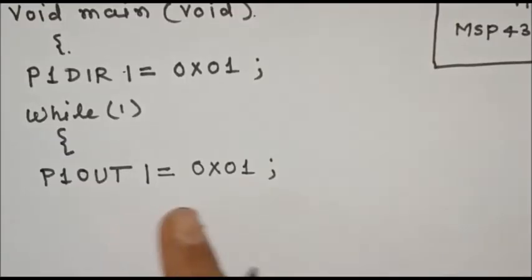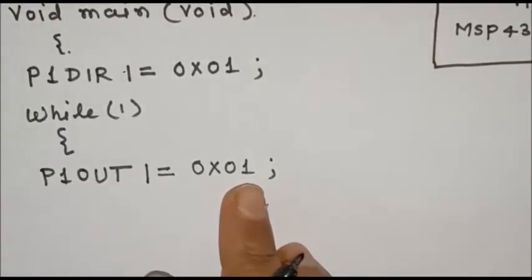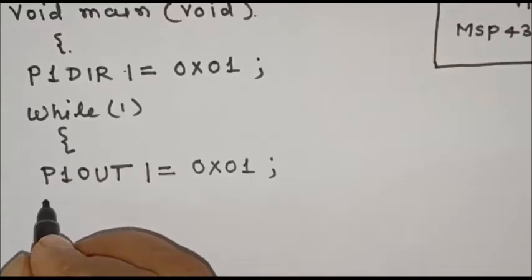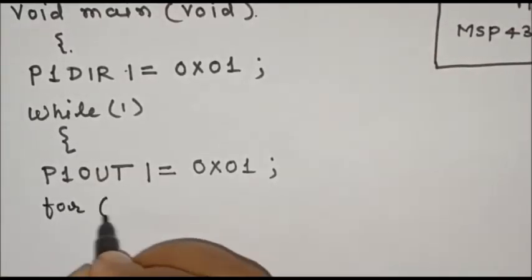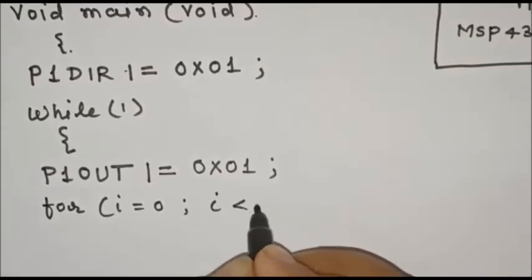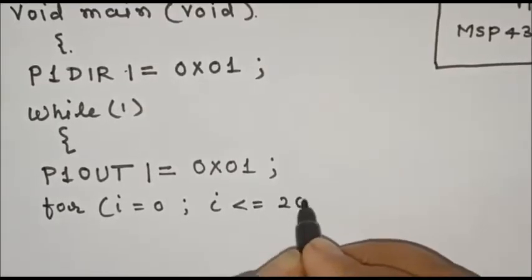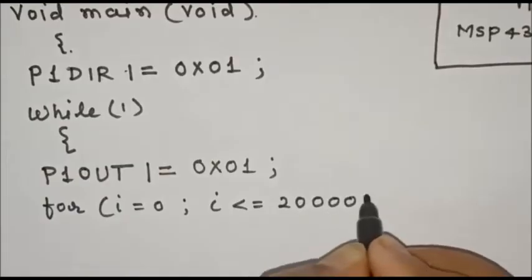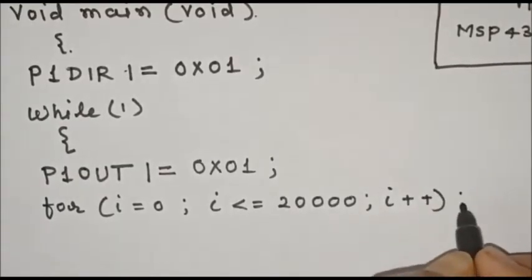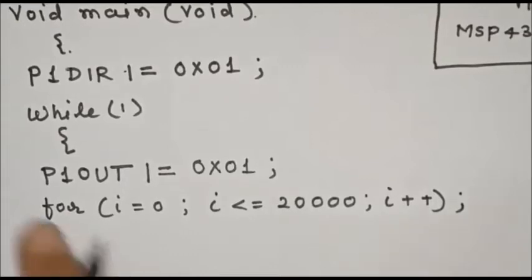Then we call some delay. For that we'll use for loop: for i equals 0, some delay, i is less than or equal to, I'll select here delay count as 20,000, i plus plus. And here I'll give a semicolon so this loop will be executed for 20,000 times.